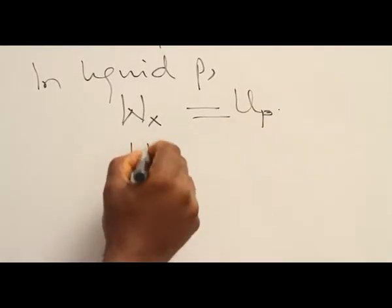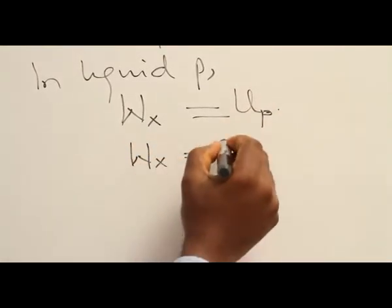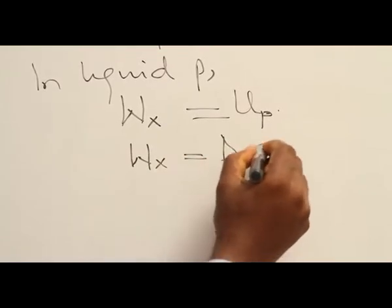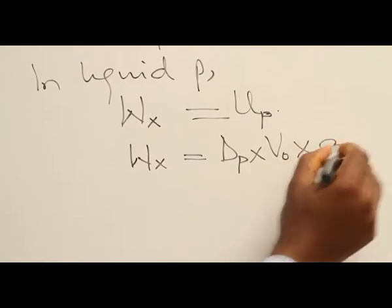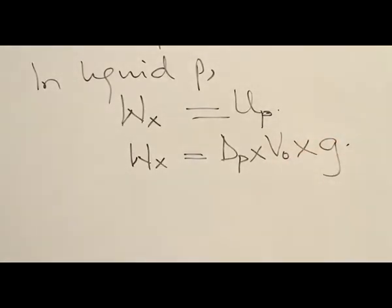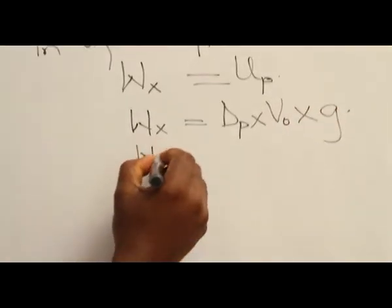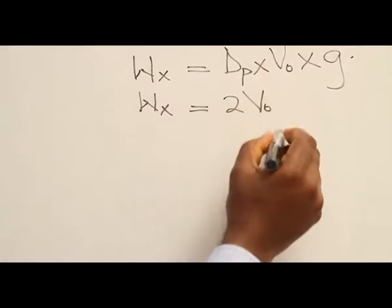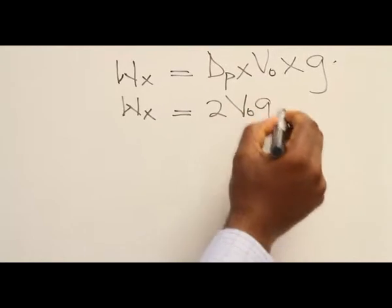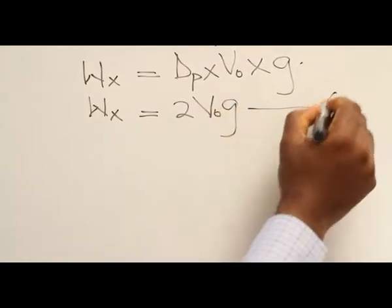So, the weight of X will give me the density of P times the volume of the object times acceleration due to gravity. We have weight of X equal to 2 times volume of object times acceleration due to gravity. I'll call this equation 1.